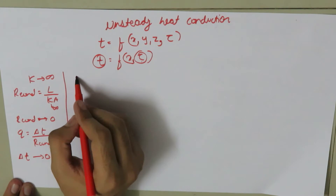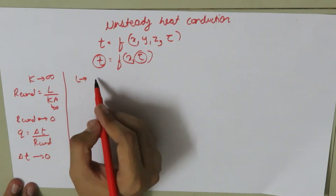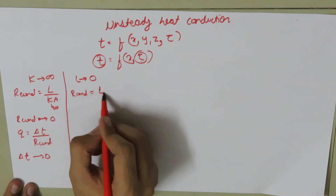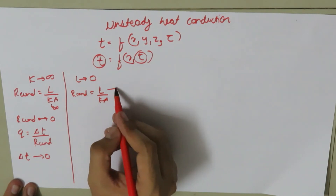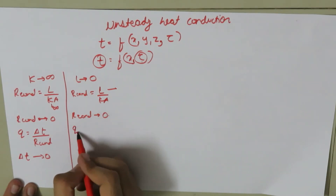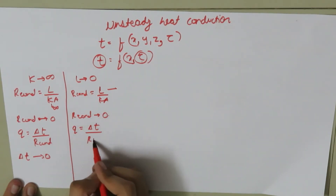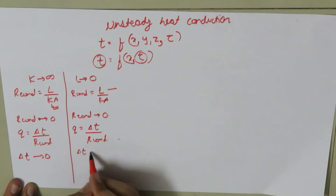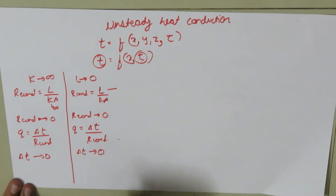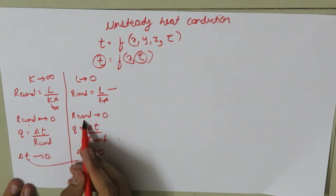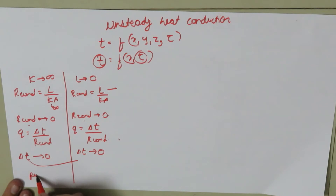If the thickness L of the substance is very small — approaching zero — then resistance due to conduction equals L/kA, so the resistance also tends to zero. Since Q equals change in temperature upon resistance, if resistance tends to zero then the change in temperature will also tend to zero. This type of analysis where the change in temperature and resistance due to conduction are zero is called pure lumped analysis.